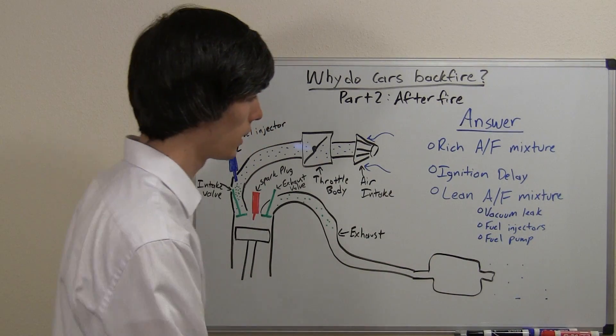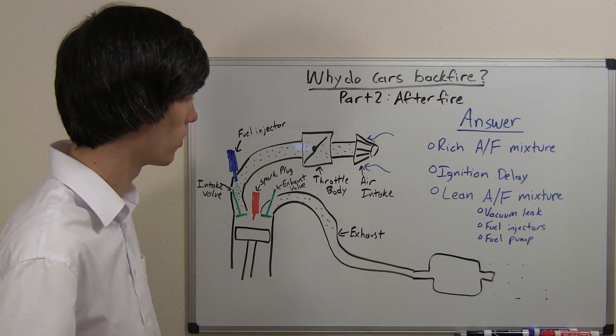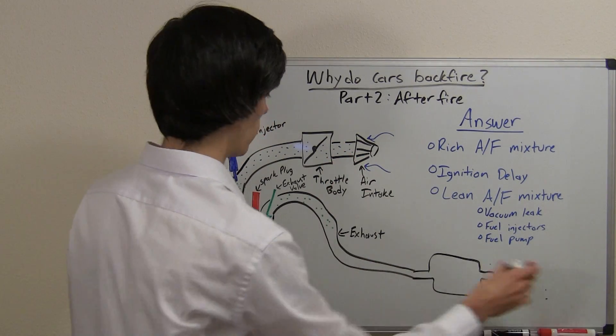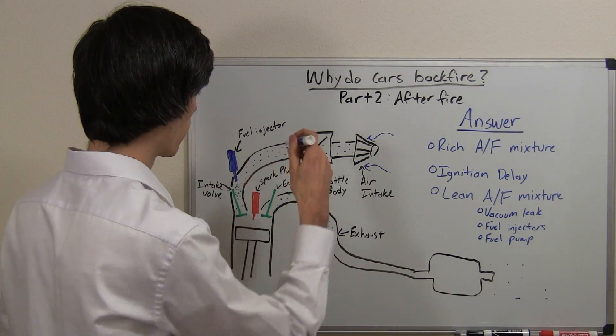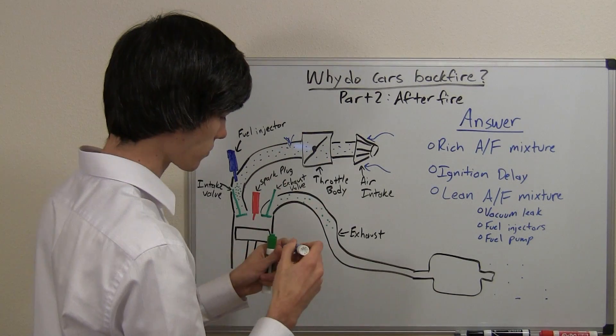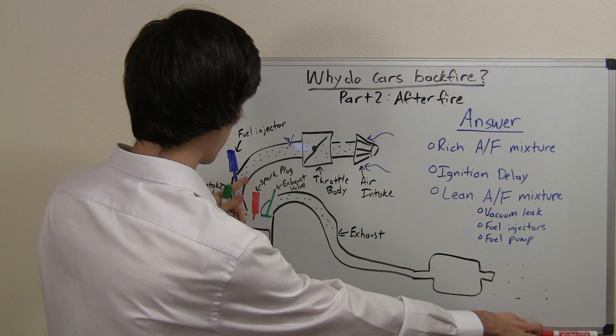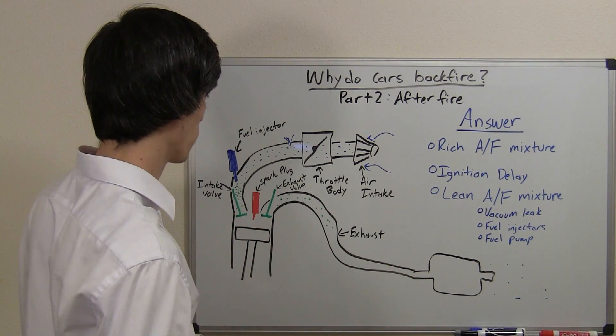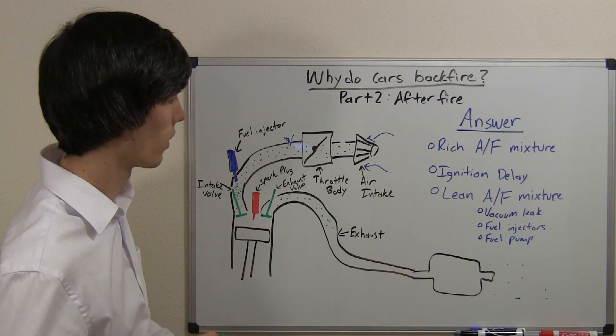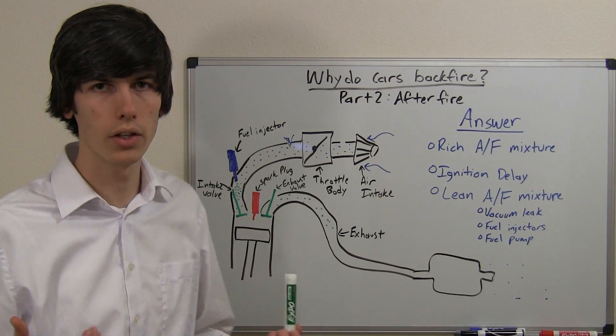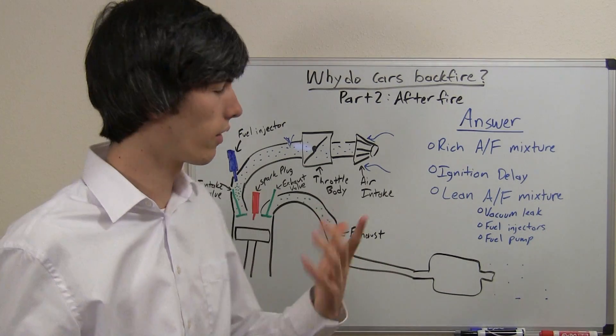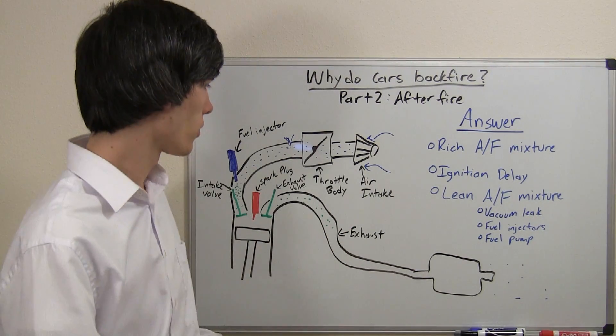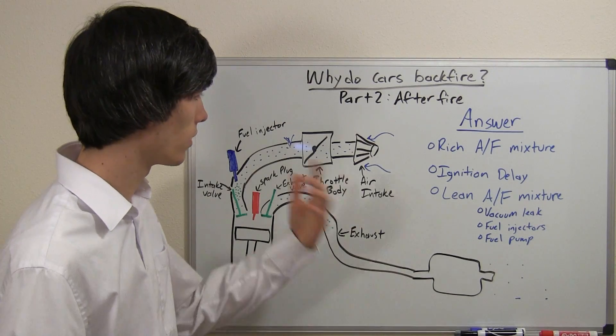So what would cause a lean air fuel mixture besides the ECU telling it to do that? Well if you had a vacuum leak, for example if you had a hole in here or let's go past the throttle body and then you're sucking in this air, you'd have excess air and you wouldn't compensate for it and so you wouldn't spray enough fuel. Also if your fuel injector was faulty or kind of clogged up and it couldn't inject enough fuel like it was supposed to, then you'd have a lean air fuel mixture and also if you had a faulty fuel pump that couldn't pump the necessary amount in. So there's many things that could cause a lean or a rich air fuel mixture.